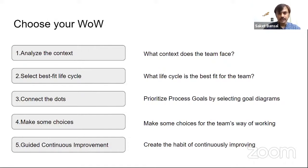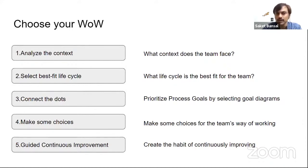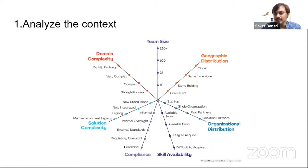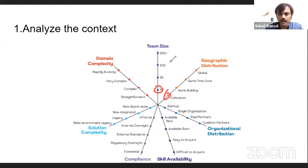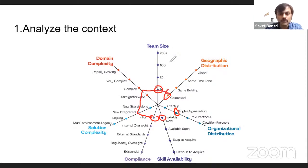So those are the five-step processes. Analyze the context — they have a kind of context identification framework, which they call a scaling factor identification tool. You sit with your team and understand where you stand. For example, team one might say: we have 10 people, we are co-located, single organization, we have all the skills needed to get the job done, we're not in a complicated compliance environment, and our application integrates with something but the domain is somewhere between complex and straightforward.